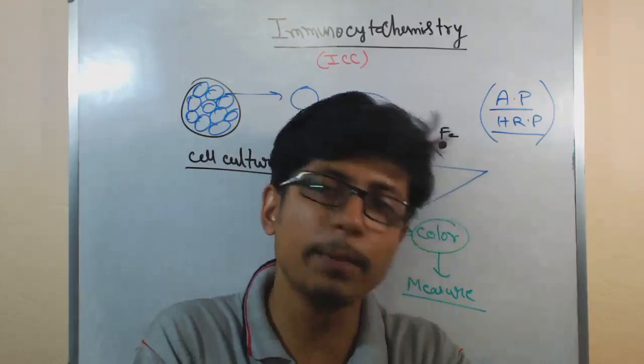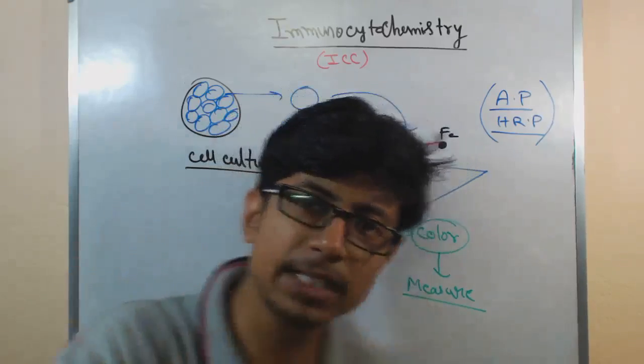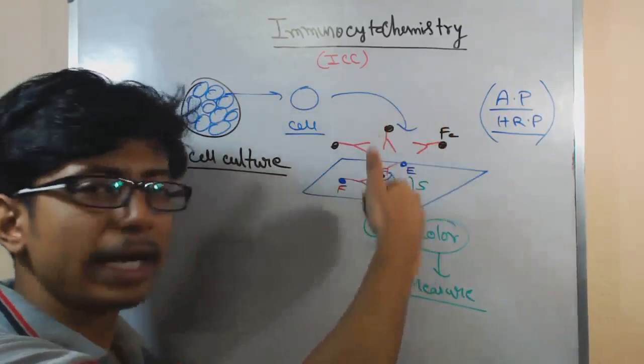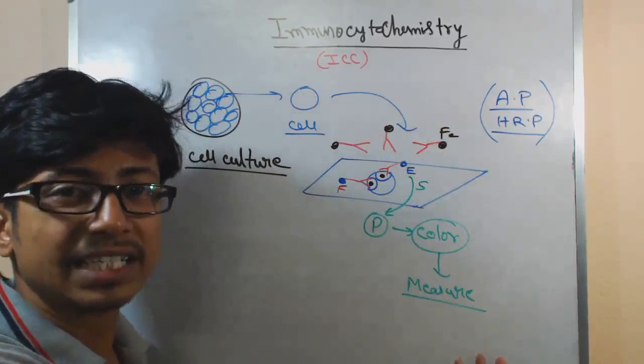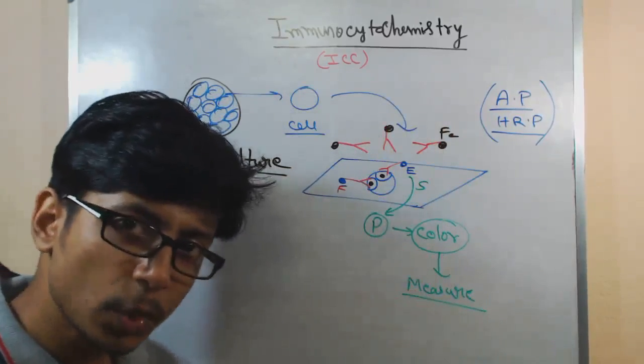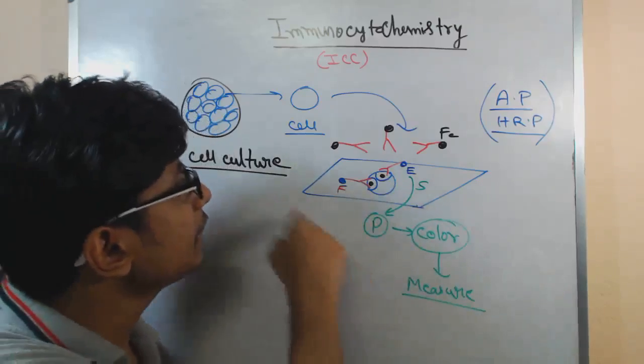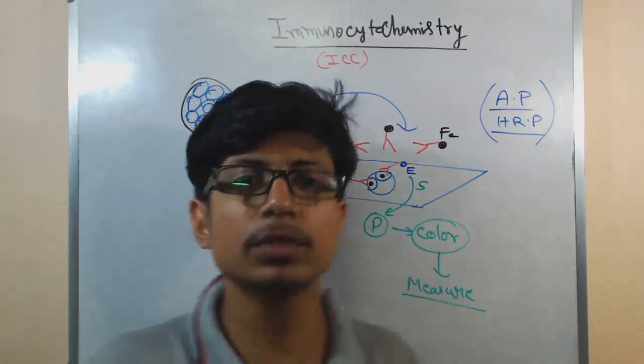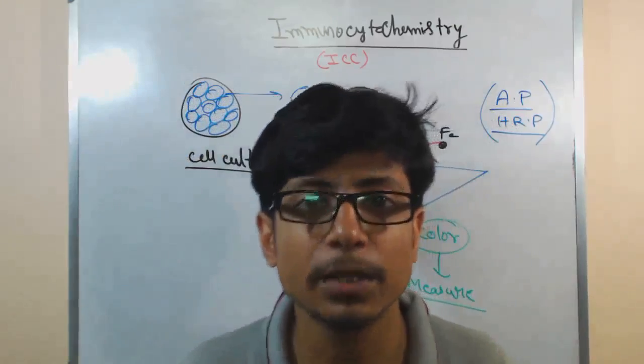Take out the tissue sample directly, fix it on the slide, apply modified antibody, see the result as a color or fluorescence.